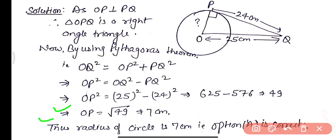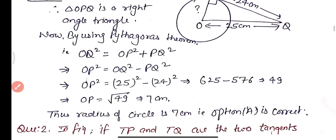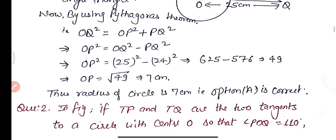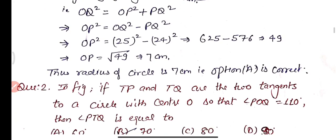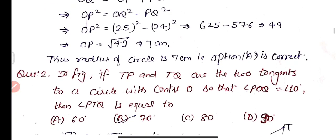The radius of the circle is 7 centimeters. Thus option A is the correct answer. This is all about Question 1. Now let's proceed to Question 2.